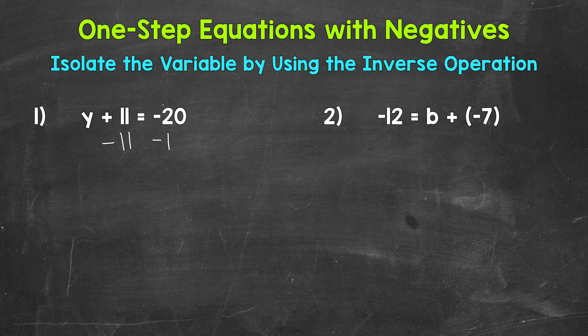So let's subtract 11 from the right side as well. On the left side of the equation, we are adding 11 and subtracting 11, so these 11s cancel each other out — they equal zero. So y is now isolated; it's by itself.